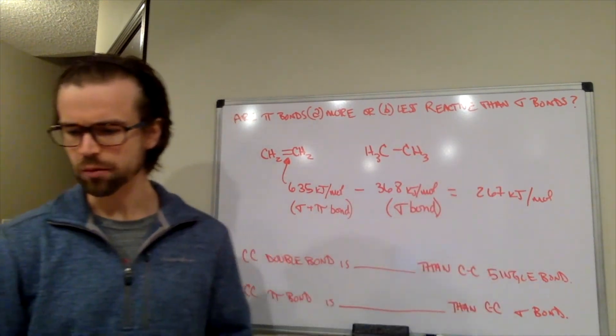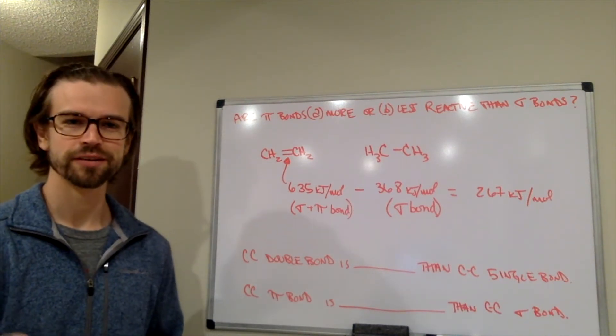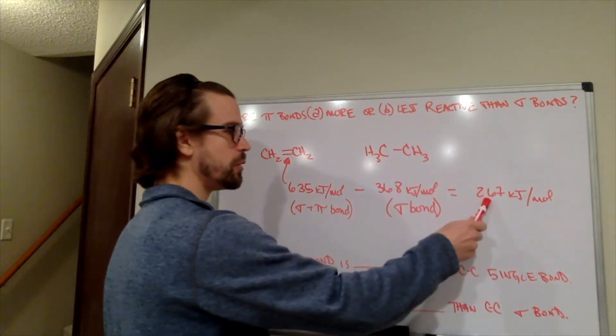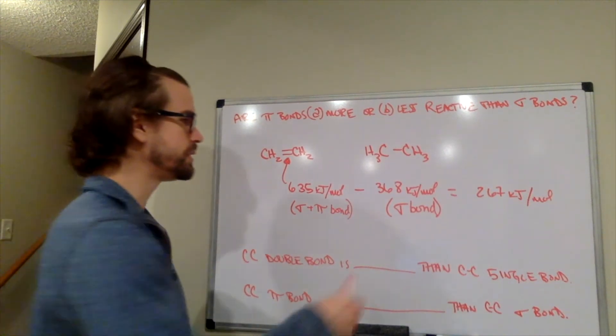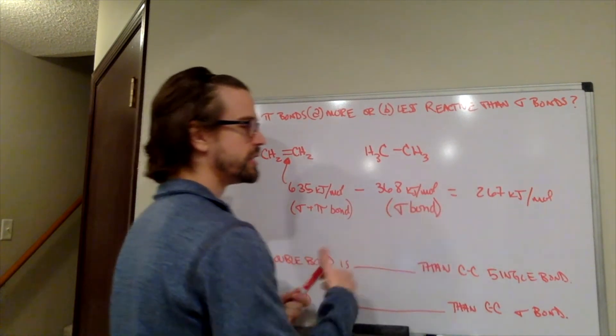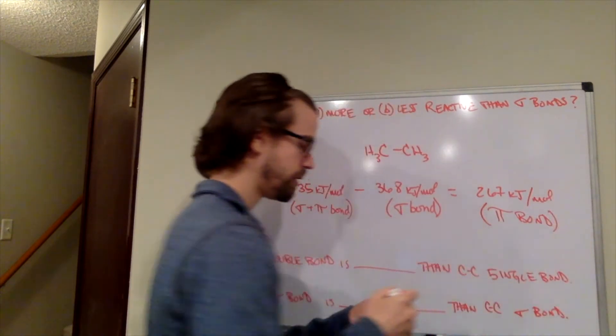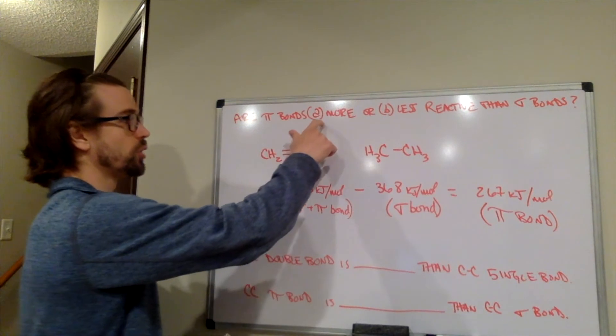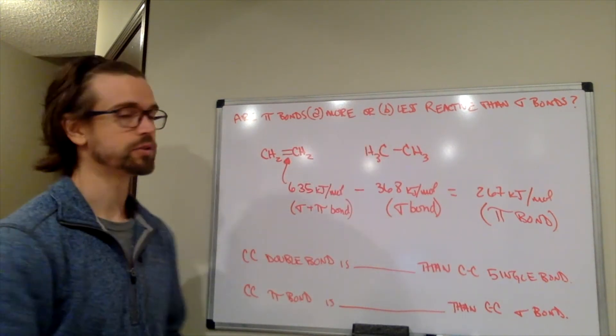So if we subtract that from that, what would this be equal to? If this is what a sigma bond is worth, and this is what a sigma and pi bond is worth, this must be the energy of a pi bond by itself. Go ahead and pause the video and say, in circle A or B here, pi bonds are more or less reactive than sigma bonds.